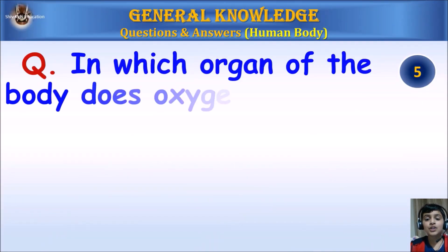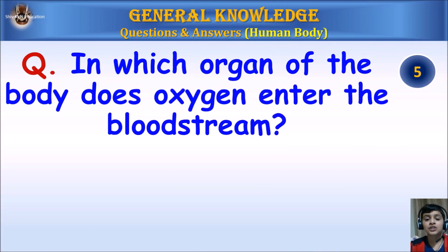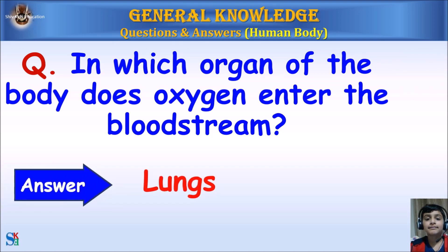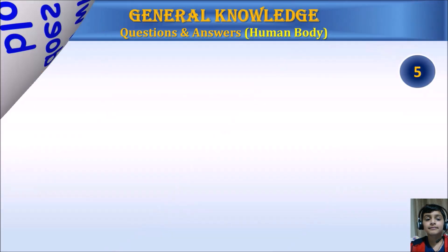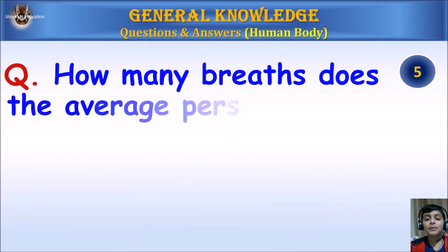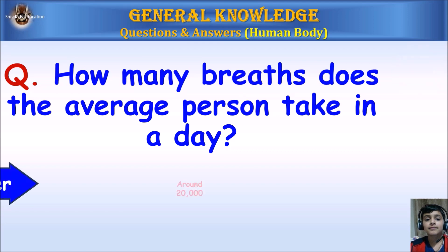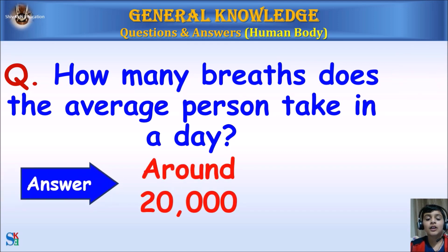In which organ of the body does oxygen enter the bloodstream? Answer: Lungs. How many breaths does the average person take in a day? Answer: Around 20,000.